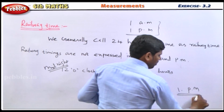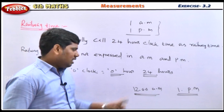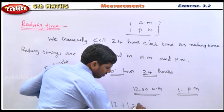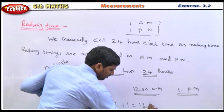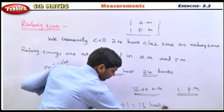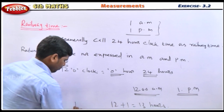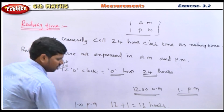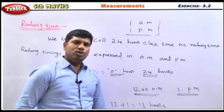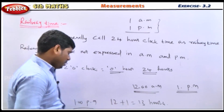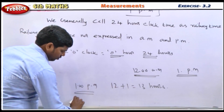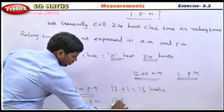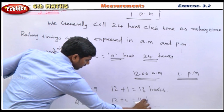1 PM: 12 plus 1 equals 13 hours. So 1 PM is 13 hours. 2 PM: 12 plus 2 equals 14 hours.